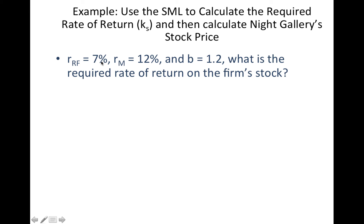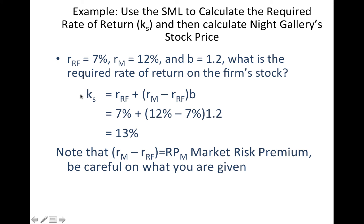So if these are the data, return on the market, RF, and beta, the required return on the company is going to be 7 plus (12 minus 7) times 1.2. This is basically from the CAPM, so don't forget this. So 13% is our required return. Remember that RM is not the same as RPM or the risk premium or the market risk premium. So be careful on what information you're given.